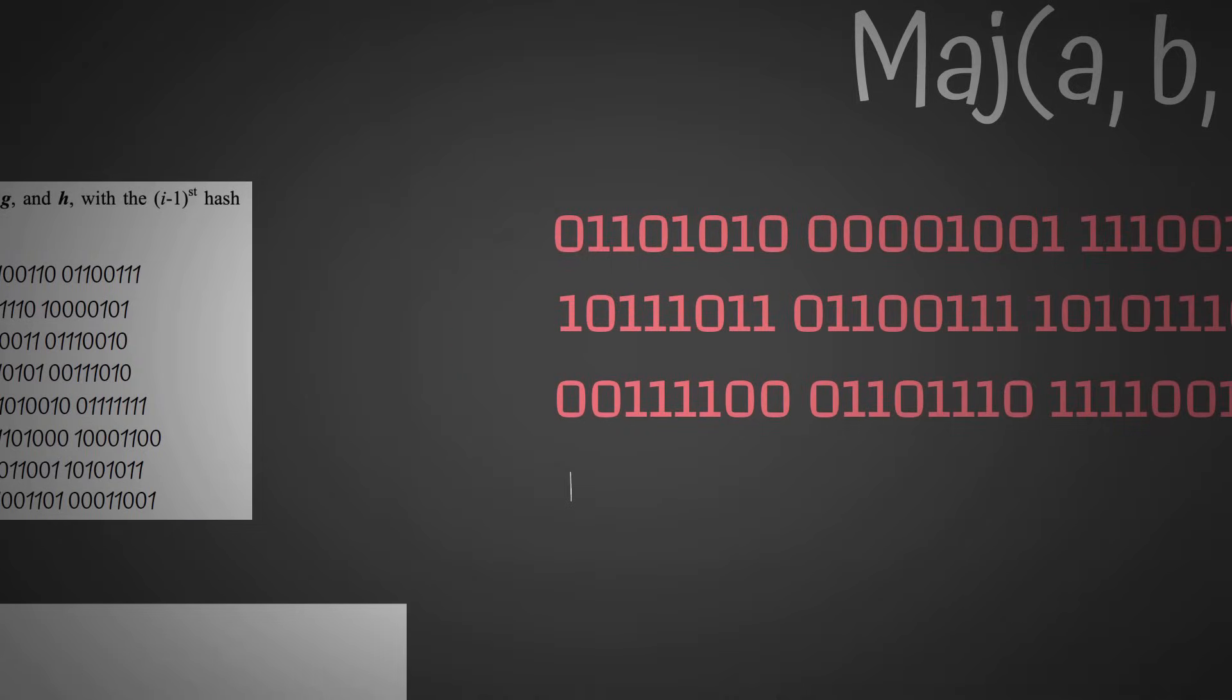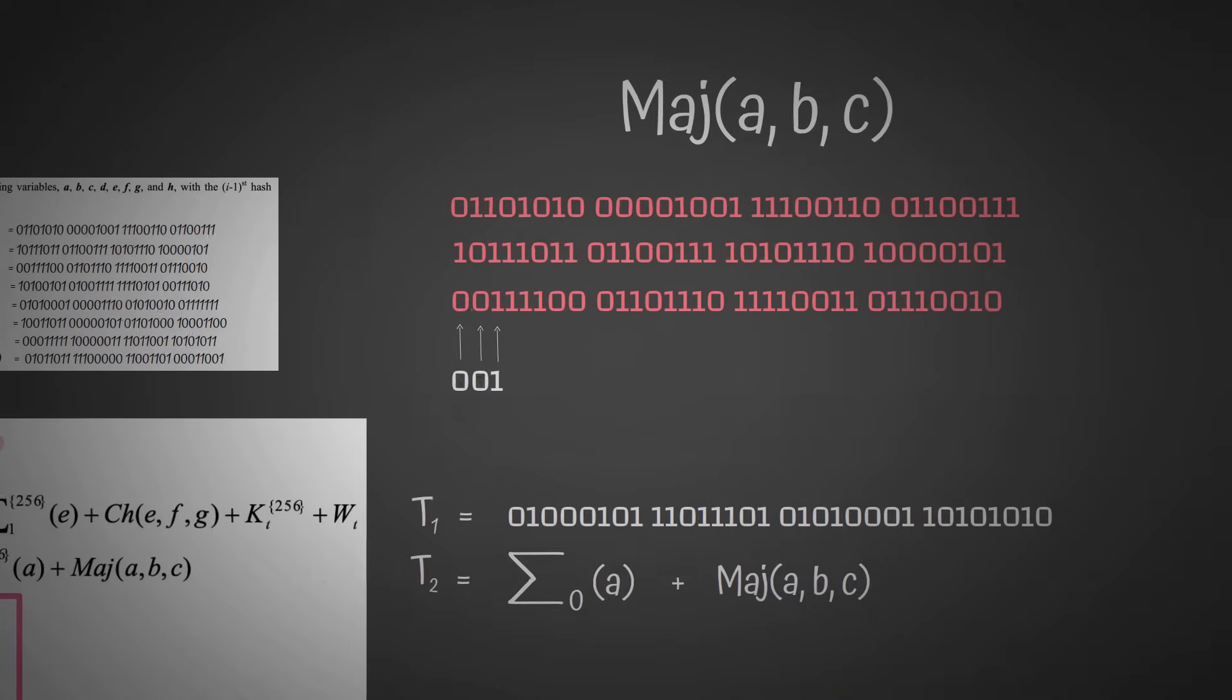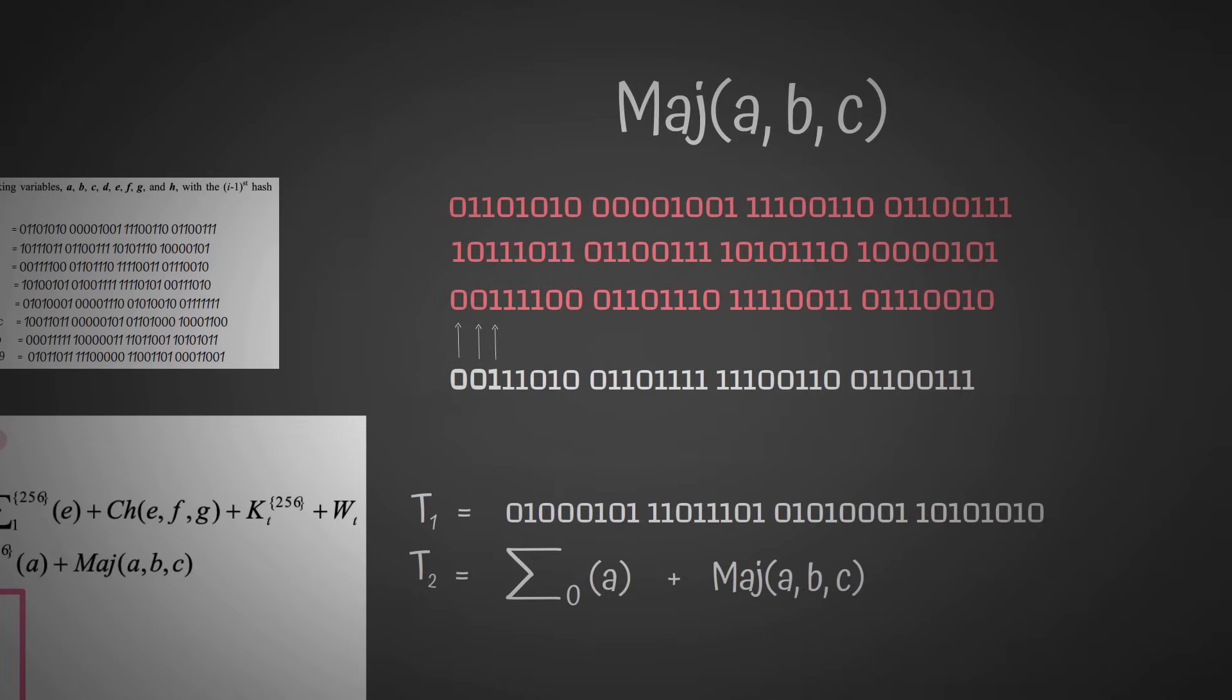We look at the first column, and we see 0, 1, 0, so the majority of the bits are 0. We go to the second column, we see 1, 0, 0, so the majority of the bits are 0. The third, they're all 1, so the majority are 1, and we keep doing that, and we get this as our output.